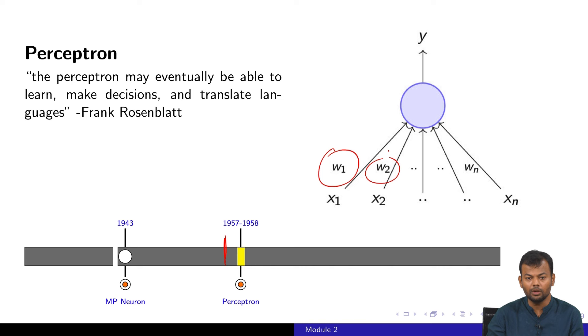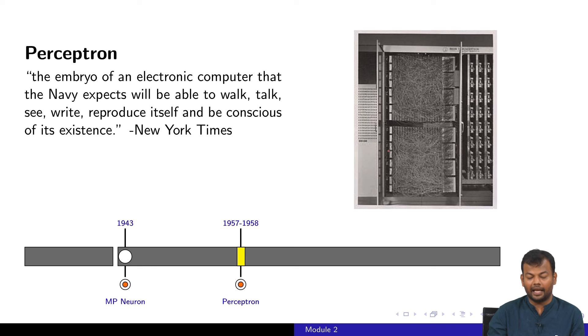This work was largely done for the Navy. This is an extract from an article written in New York Times way back in 1957 or 58 where it was mentioned that the embryo of this perceptron is an embryo of an electronic computer that the Navy expects will be able to walk, talk, see, write, reproduce itself, and be conscious of its existence. I'm not quoting something from 2017 or 18, this is way back in 1957, 58.